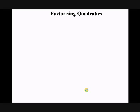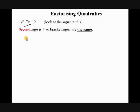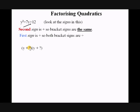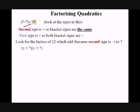Factorizing quadratics: look at y² + 7y + 12. We look at the signs — the second sign and the first sign are important. Because the second sign is plus, the signs in both brackets are going to be the same. And because the first sign is plus, both bracket signs are going to be plus. So we need (y + ?)(y + ?), and we use the rule: we want the factors of 12 which add to 7.